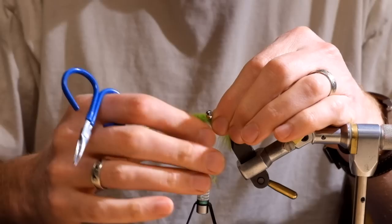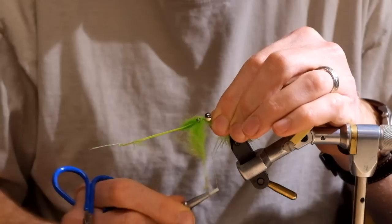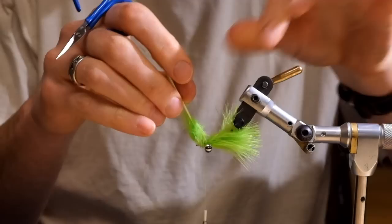I'm gonna make a nice soft loop right in front of the eyes. Get those feathers positioned so they're directly on the bottom of the hook and make three or four nice firm wraps.